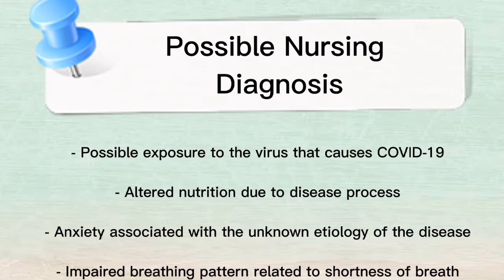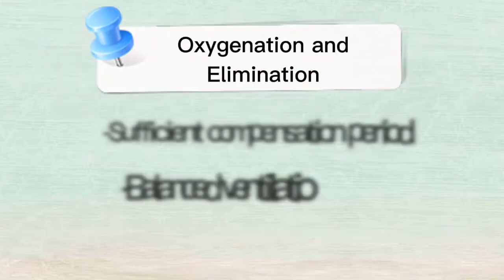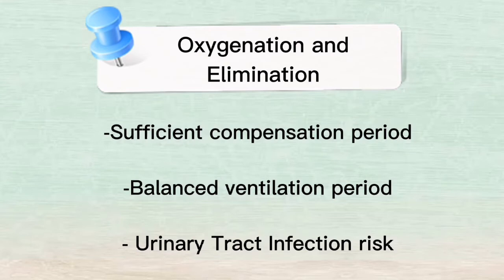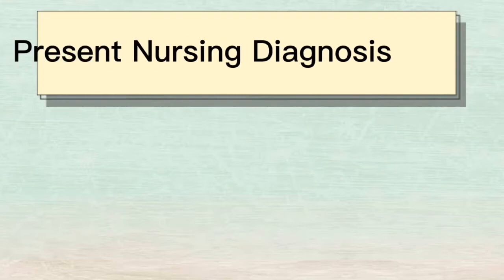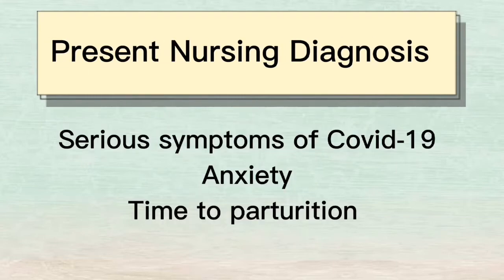Possible nursing diagnoses include: possible exposure to the virus that causes COVID-19; altered nutrition due to disease process; anxiety associated with unknown etiology of the disease; impaired breathing pattern related to shortness of breath; oxygenation — sufficient compensation period, balanced ventilation; elimination — urinary tract infection risk; rest and protection — sleep disturbance risk. Present nursing diagnosis: serious symptoms of COVID-19, anxiety, and time to parturition.